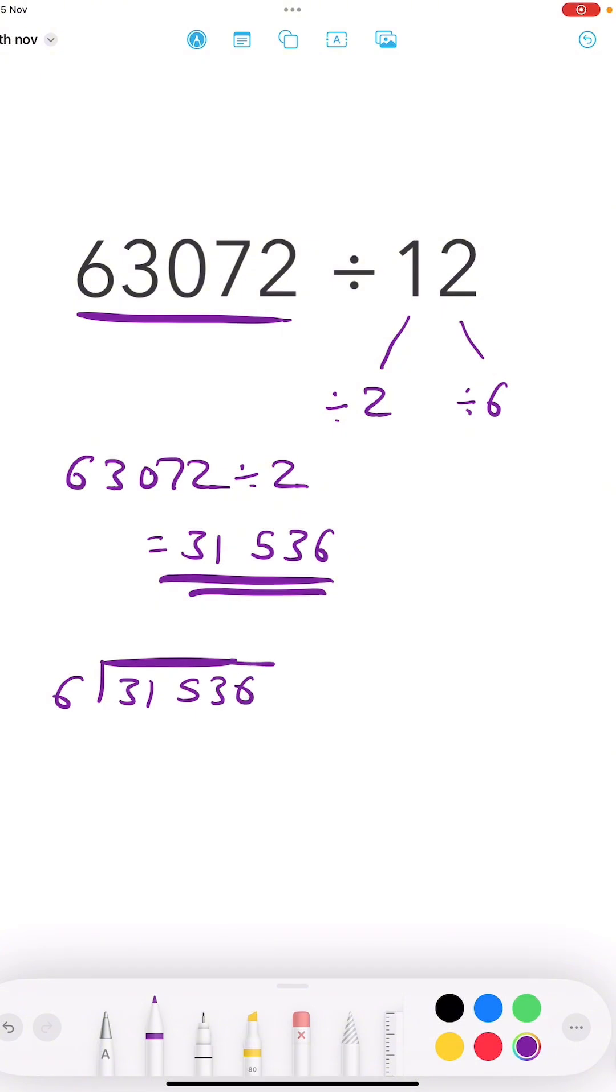6 into 3 doesn't go. 6 into 31 goes 5 times, remainder 1. 6 into 15 goes twice, remainder 3. 6 into 33 goes 5 times, remainder 3. And 6 into 36 goes 6 times.